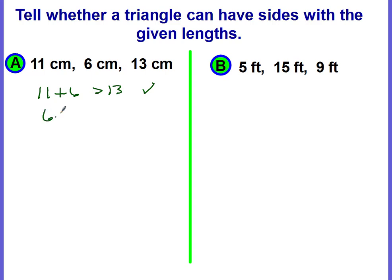Now I'm going to try the next combination, 6 plus 13. Is that greater than the third side of 11? 6 plus 13 is 19. That is greater than 11. And my last combination is going to be 13 plus 11. Is that greater than 6? Well, it's 24 and that's definitely greater than 6. So yes, these three side lengths will form a triangle.